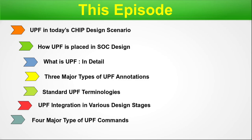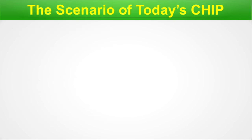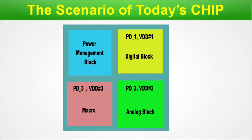Let's begin with today's chip scenario. This structure represents what many advanced chips look like inside. We have multiple voltage domains: VDD1, VDD2, and VDD3. There could be a digital block, analog block, or a macro ordered from an IP vendor. These are different blocks inside your design, and there can be one power management block. The VDD for the analog block and the VDD for the digital block will be very different, and a macro from an IP vendor might have a different VDD as well.